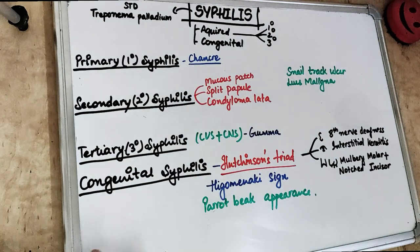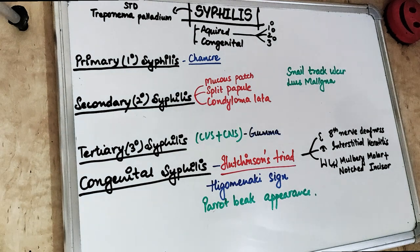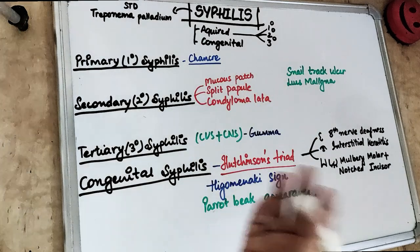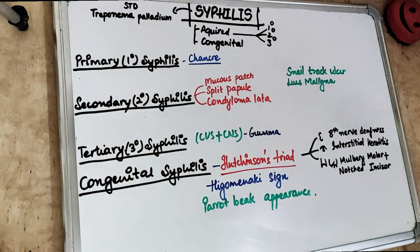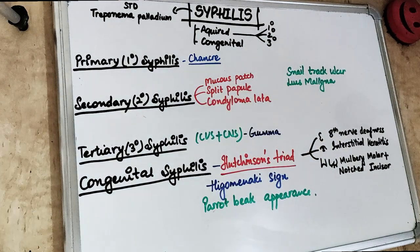Syphilis, as we all know, is a sexually transmitted disease and it is an infection of a spirochete which we call Treponema pallidum. The kinds of syphilis we have are acquired syphilis, which we get from outside, or when a child is born with syphilis, which is congenital syphilis.